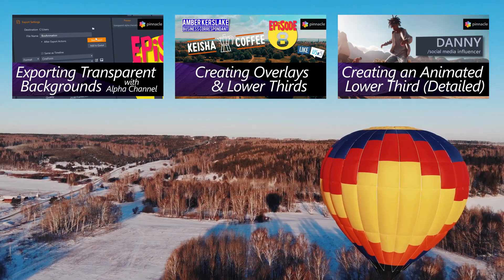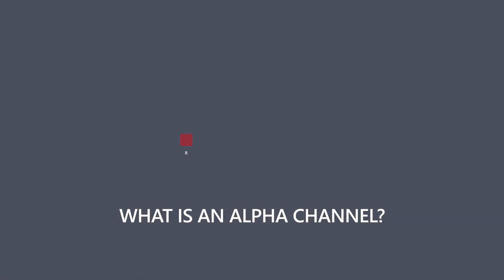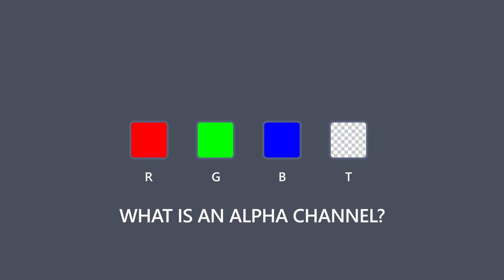But firstly, what is an alpha channel? Along with the red, green and blue values for each pixel in a video file, which is abbreviated to RGB, some video formats also record the value of opacity or transparency of each pixel. Typically, these file formats are AVI and MOV files. MP4s do not have any transparency data.